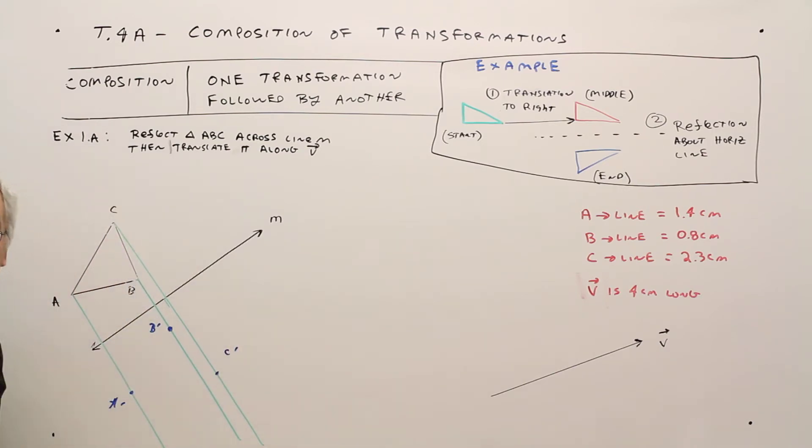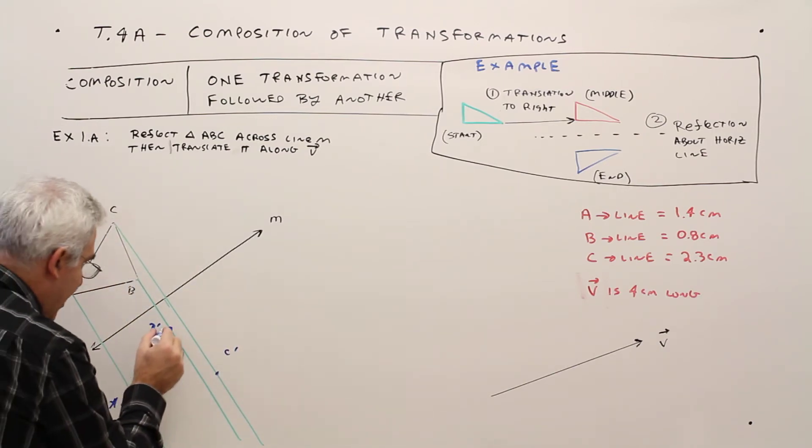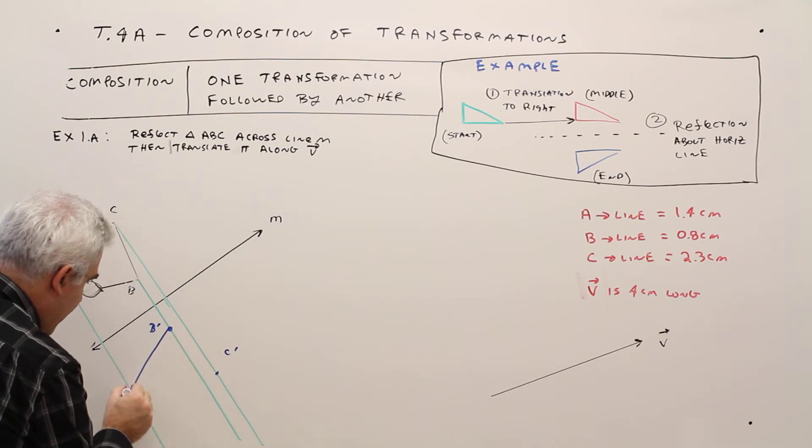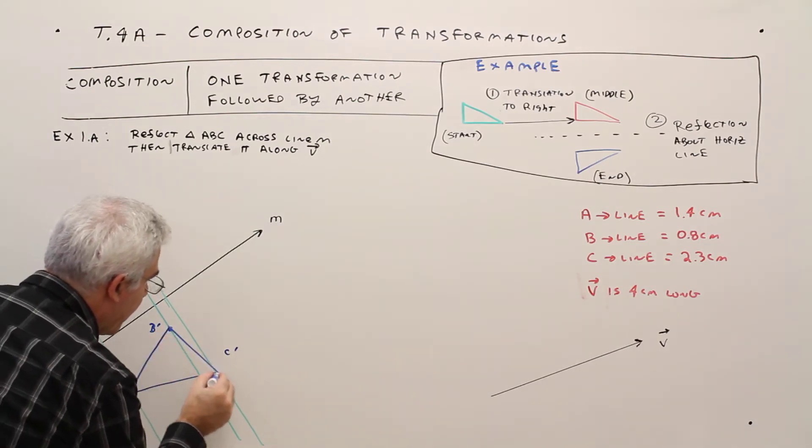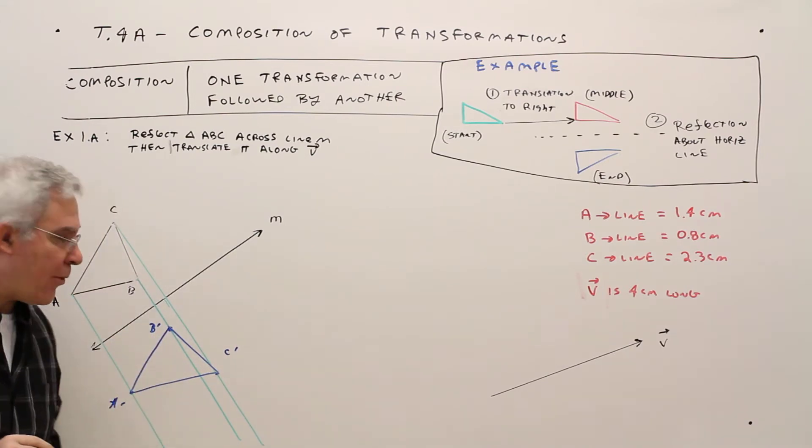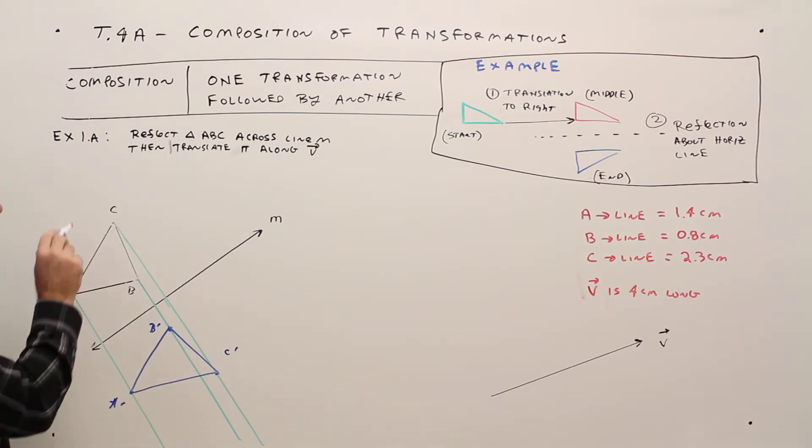Alright, so I call that A prime, B prime, and C prime. And then again, you can use your ruler. I'm just trying to speed up the video a little bit. So that's A prime, B prime, C prime, just the reflection.